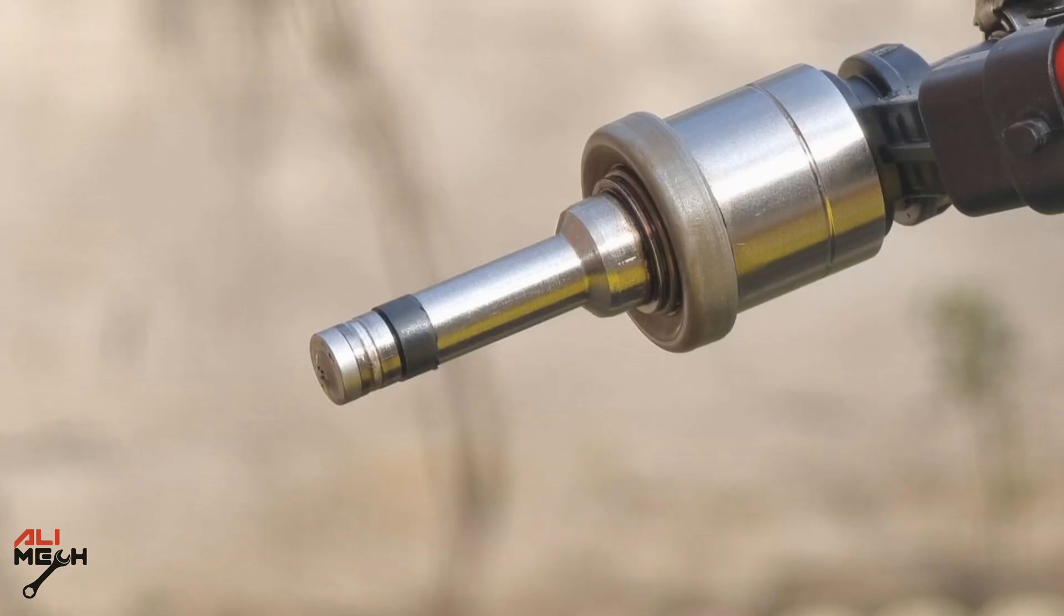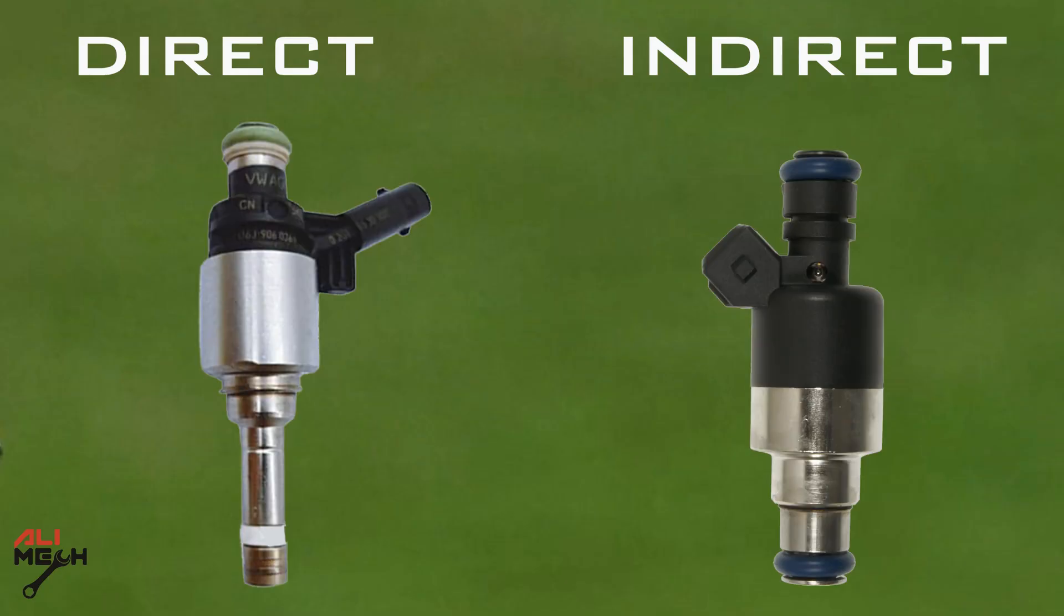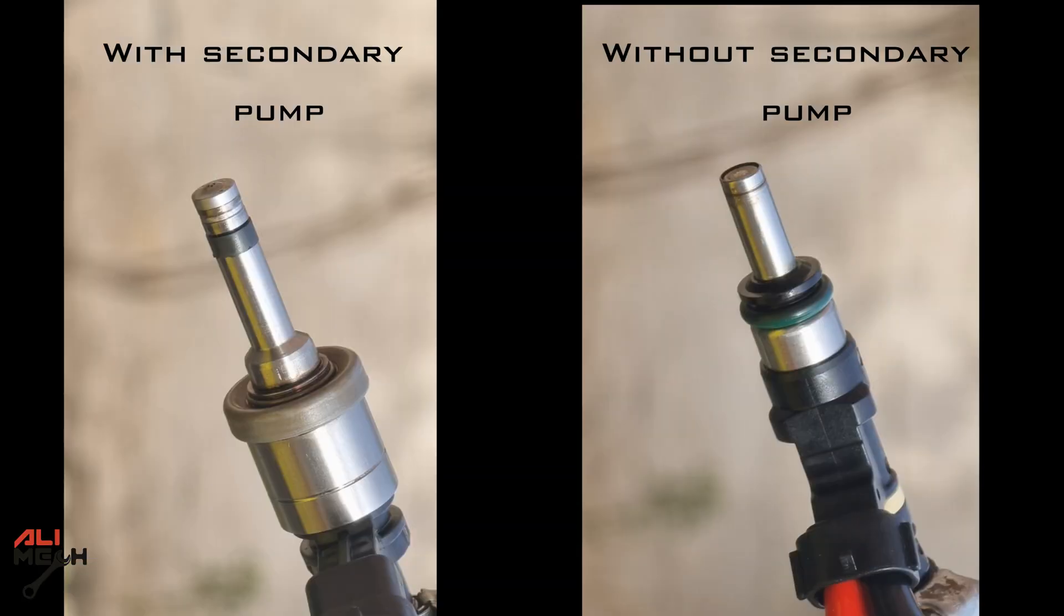Direct injections have a small nozzle at the tip, while indirect injections have a large nozzle with a small hole on the tip. Direct injections tend to have shorter and thicker body compared to indirect fuel injectors. Direct fuel injectors with a secondary camshaft fuel pumps are metal, and direct injectors without secondary fuel pumps are hard plastic case.